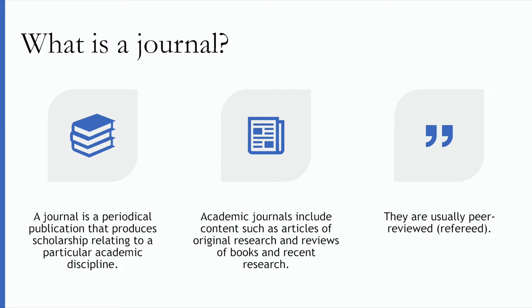Journal articles are typically peer-reviewed, which may also be referred to as a refereed journal. Peer-review means that the article has been evaluated by the peers of the author before it's been published. These reviewers are experts in the field, and when an author writes an article they submit it for peer review, where it is sent to several anonymous reviewers by the journal editor. These reviewers evaluate the work and decide if it's fit to be published. Peer-review functions as a form of regulation to ensure that published articles are reliable and maintain a high quality within the discipline.